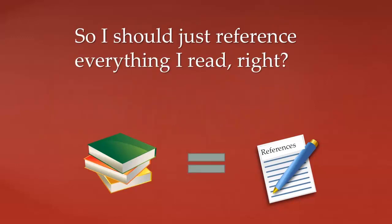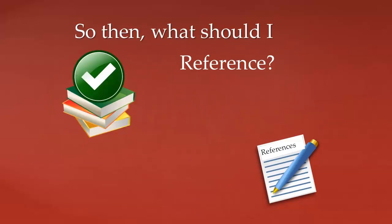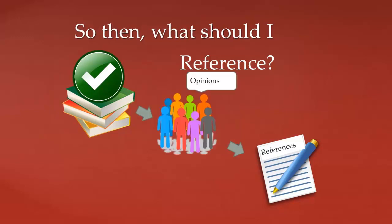So I should just reference everything I read, right? No. So then, what should I reference? You should only include sources that you have actually read and that are relevant to your assignment topic, but that's a whole other story on how to write an academic paper. In order to avoid plagiarism, you should reference if you use someone else's idea in your assignment. You do not need a reference if what you are saying is common knowledge.